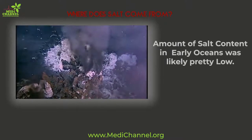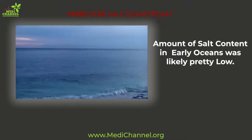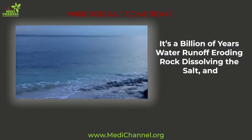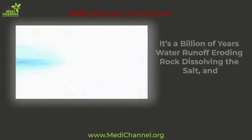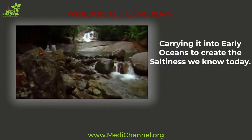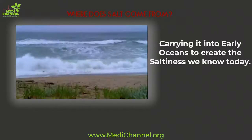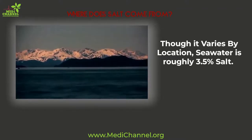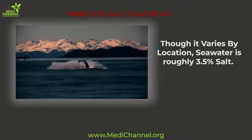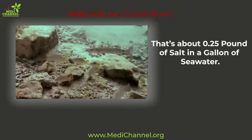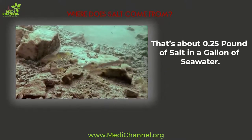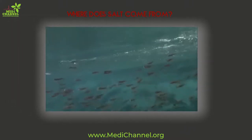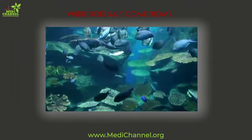Still, the amount of salt content in these early oceans was likely pretty low. It took billions of years of water runoff eroding rock, dissolving the salt, and carrying it into the oceans to create the saltiness we know today. Though it varies by location, seawater is roughly 3.5% salt — that translates to about a quarter pound of salt per gallon of seawater, or a total of nearly 50 quadrillion tons of salt in all the earth's oceans.